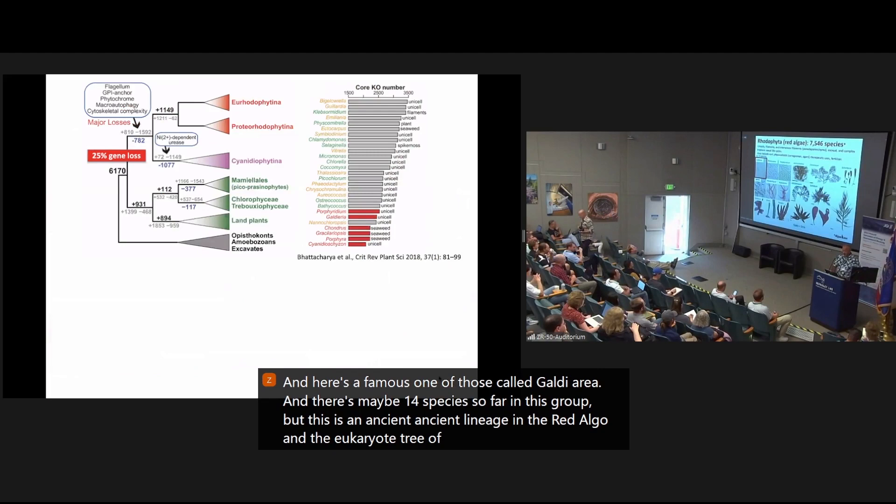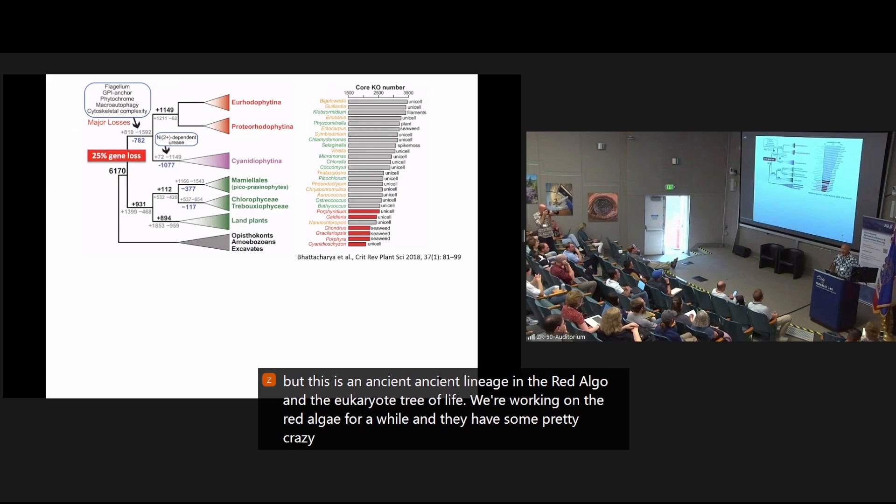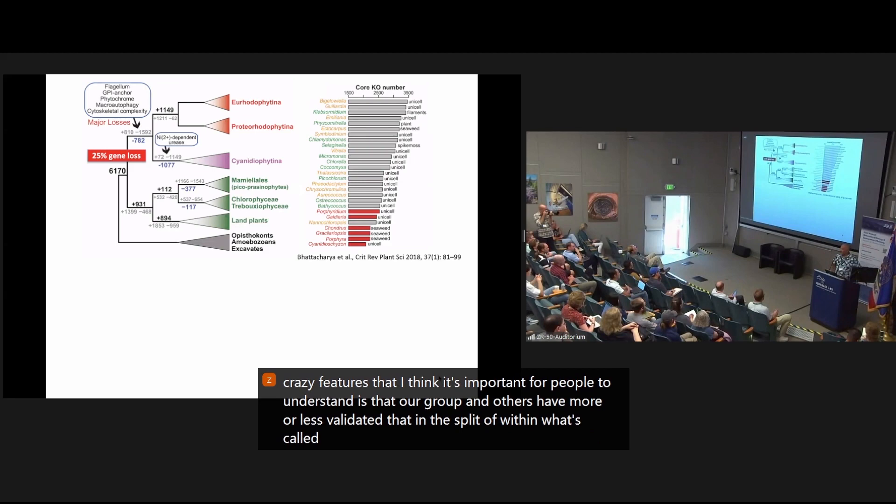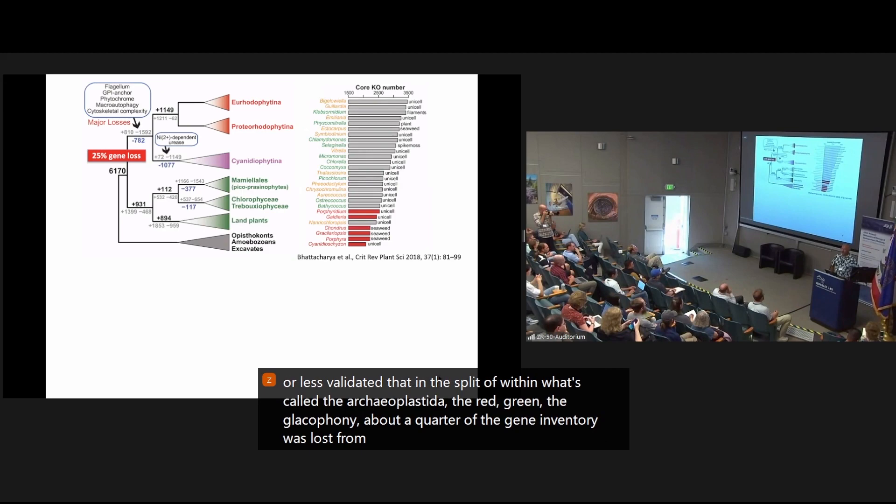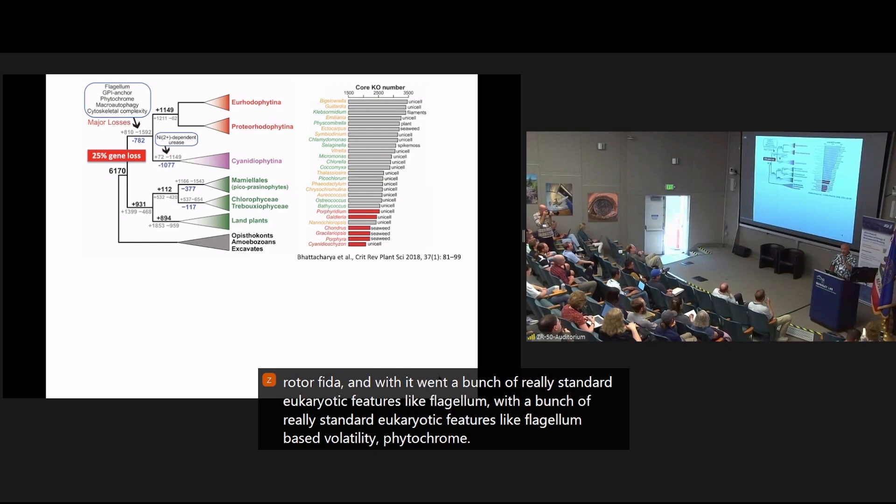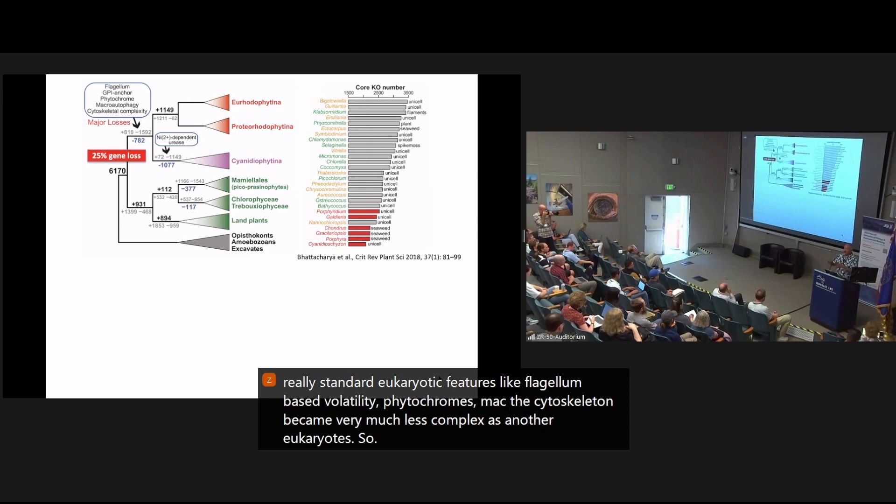We've been working on the red algae for a while, and they have some pretty crazy features that I think it's important for people to understand, is that our group and others have more or less validated that in the split within what's called the archaeoplastida, the red-green-glaucophyte algae, about a quarter of the gene inventory was lost from the ancestor of the red algal lineage, the rhodophyta, and with it went a bunch of really standard eukaryotic features like flagellum-based motility, phytochromes, macroautophagy, the cytoskeleton became very much less complex as in other eukaryotes. So somehow this lineage went through a very stressful and very selective time, and a lot of genes were lost that are standard in eukaryotes.